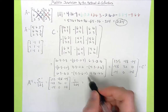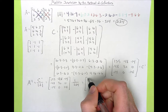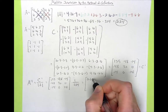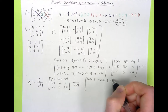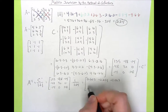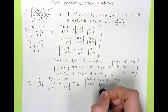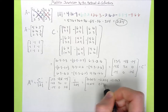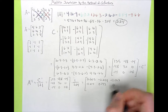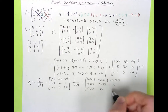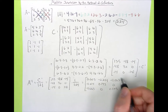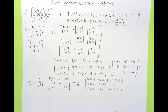What we're left with is the following values: 0.603, −0.214, −0.063, −0.214, 0.143, 0, −0.063, 0, and 0.125. So we finally have the inverse of matrix A.